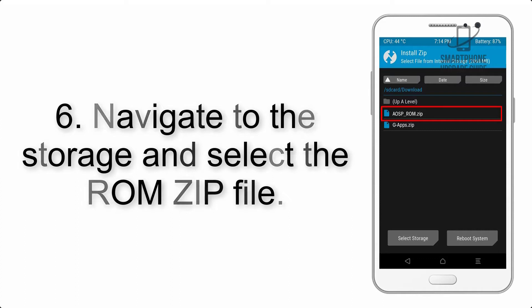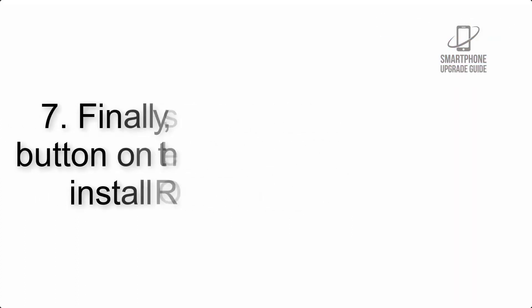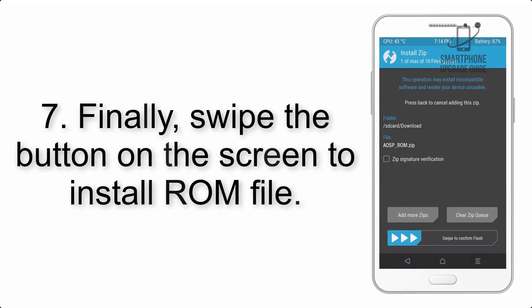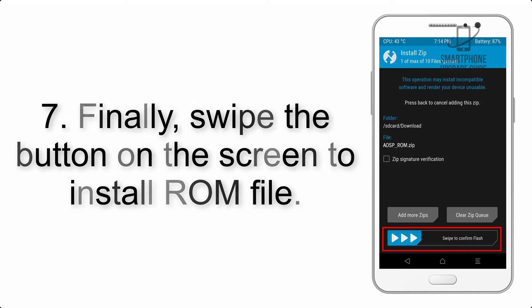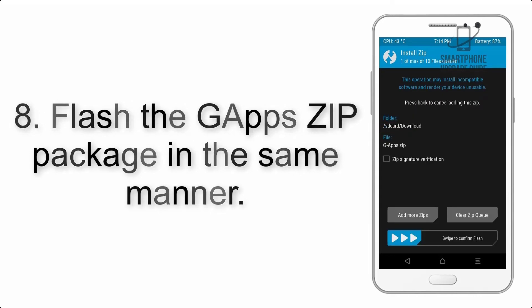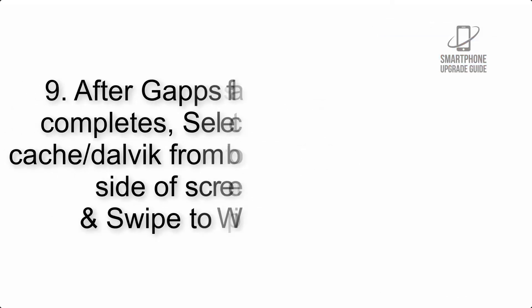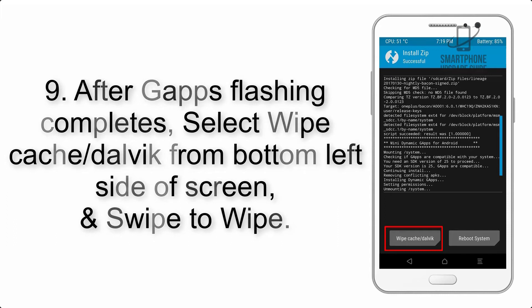Step 5: Go back to the recovery main screen and tap on the Install button. Step 6: Navigate to the storage and select the ROM zip file. Step 7: Finally, swipe the button on the screen to install the ROM file. Step 8: Flash the GApps zip package in the same manner.